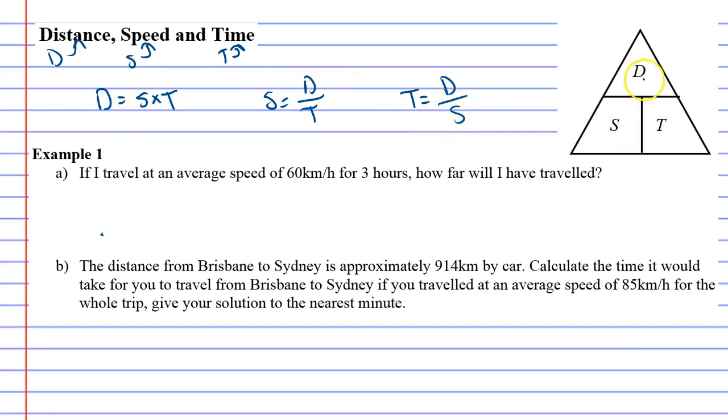All right, let's get into the example. Question A: If I travel at an average speed of 60 kilometers an hour, so speed is 60, for three hours, so time is three, how far will I have traveled?